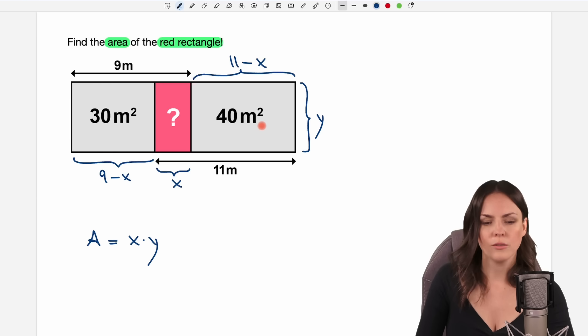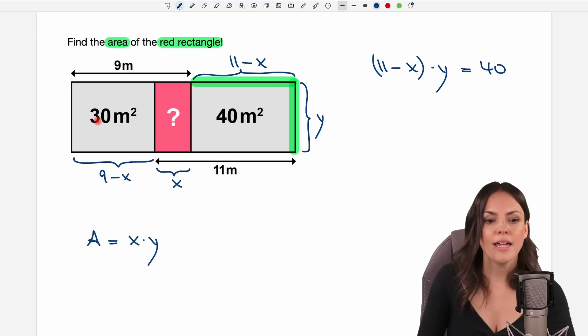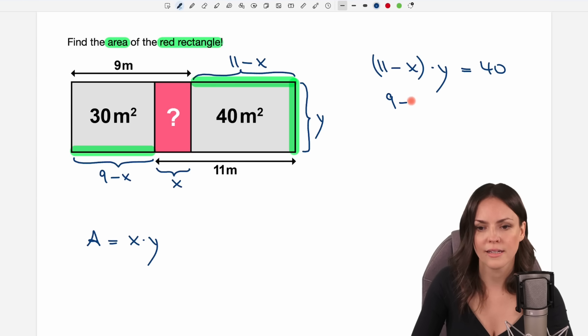Okay then we can use the areas of our rectangles. So if we want to find the 40 here we would just multiply the lengths of these two sides. So we would take 11 minus x, write it in parentheses so that we take this entire side and multiply it by y to get the area of 40. And the same with this rectangle here. We take the 9 minus x this time, write it in parentheses, multiply it by y again. But this time we get an area of 30.